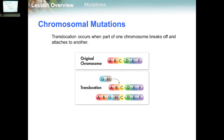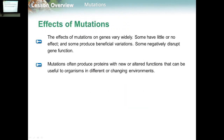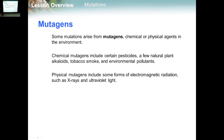Let's check the effects of mutations. The effects of mutations on genes vary widely. Some have little or no effect, some produce beneficial variation, and some negatively disrupt gene function. Mutations often produce proteins with new or altered functions that can be useful to organisms in different or changing environments. Mutagens are chemical or physical agents in the environment that induce mutations. Chemical mutagens include certain pesticides, natural plant alkaloids, tobacco smoke, and environmental pollutants.